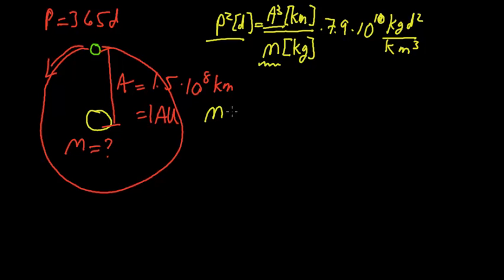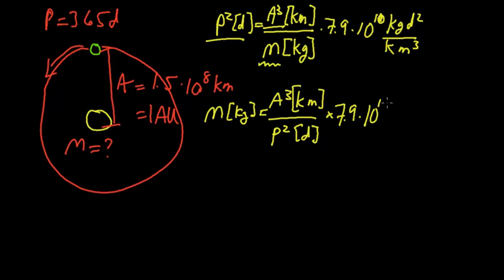And so we end up with mass, it's going to come out in kilograms. We bring the p squared over by dividing both sides. And this is a cubed in kilometers over p squared, measured in days, times the constant, 7.9 times 10 to the 10 kilogram day squared per kilometer cubed.